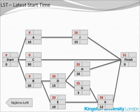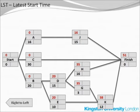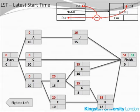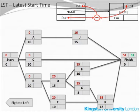Let's move on to the latest start time, LST — not LSD. LST is the latest time in which you can start any activity so as not to cause the entire project to delay. This calculation starts at the finish node and then is developed from right to left until the start node. With the finish node, the latest start time is the same value as the earliest start time. For any other activity, take the LST of the next activity and subtract the duration of the current activity to get its latest start time. The finish node's latest start time is 51, and the duration of activity J is 15.